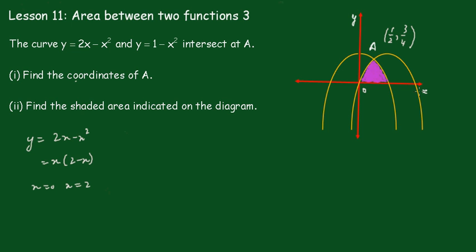So x equals 0 is confirmed at the origin, and x equals 2, though we don't really need that one. Taking y equals 1 minus x squared and factorising, we get (1 minus x)(1 plus x) equals 0, so x equals 1 or x equals negative 1. So we have our limits: 0, one half, and 1.